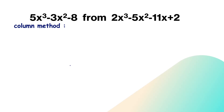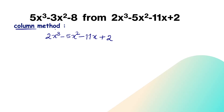For multinomial by multinomial subtraction — where expressions have more than one term — let us subtract two expressions using the column method. We first write the expression from which we subtract: 2x³ minus 5x² minus 11x plus 2. In the column method, we arrange the terms so that like terms are aligned in the same column.